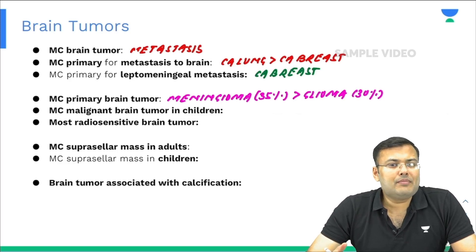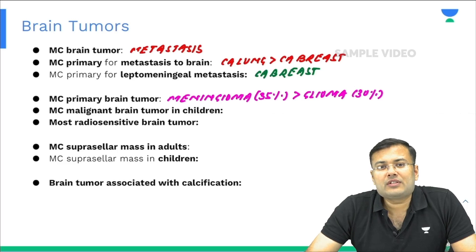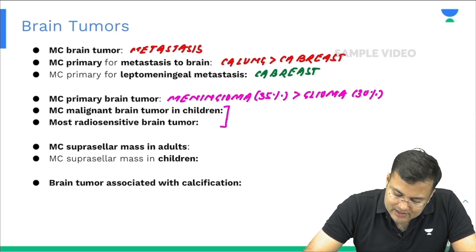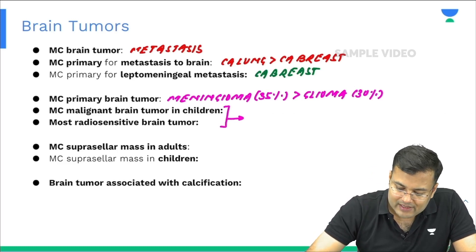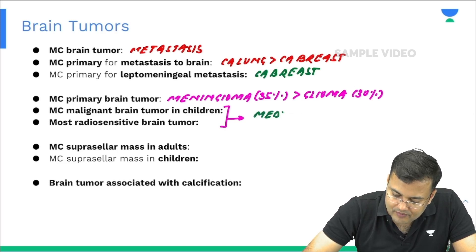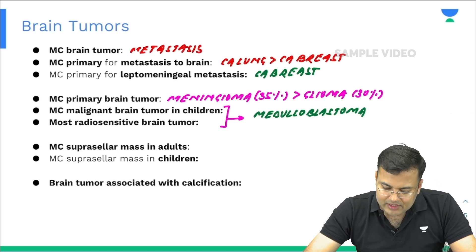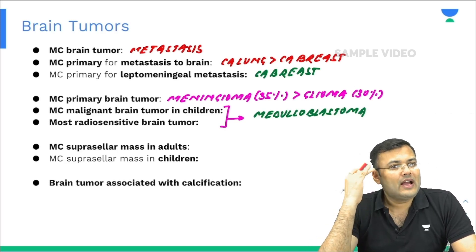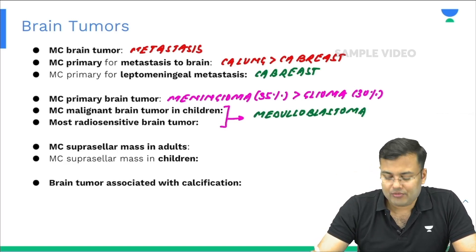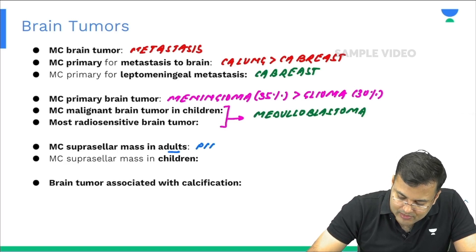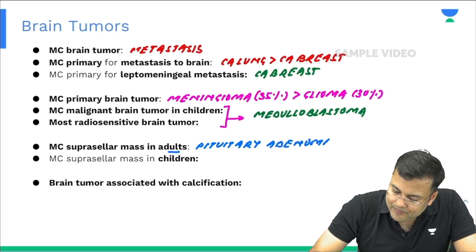What is the most common malignant brain tumor in children? It is medulloblastoma. This same tumor is also the most radiosensitive brain tumor — so for both questions, the answer is medulloblastoma. For suprasellar masses: in adults it is pituitary adenoma; in children it is craniopharyngioma.